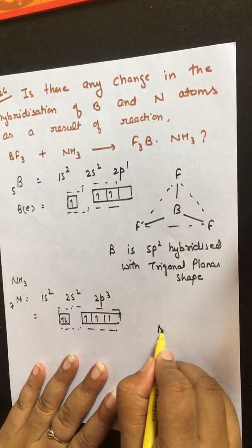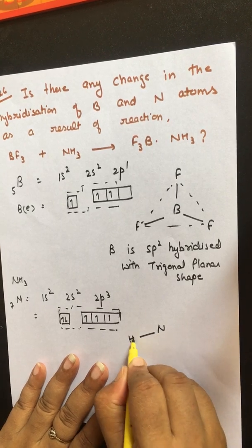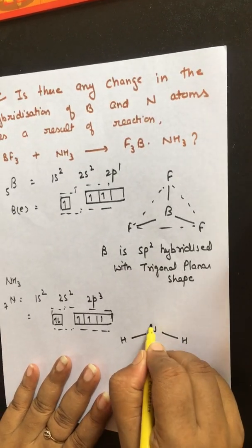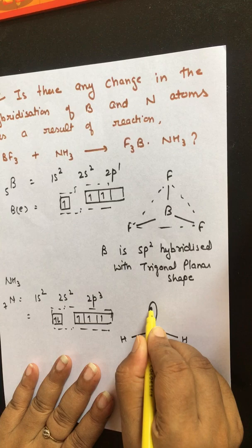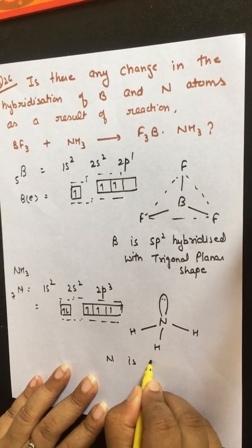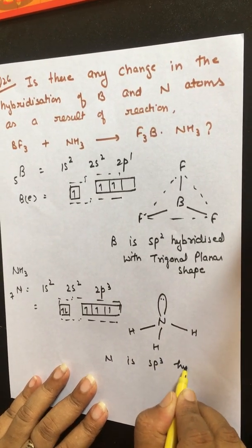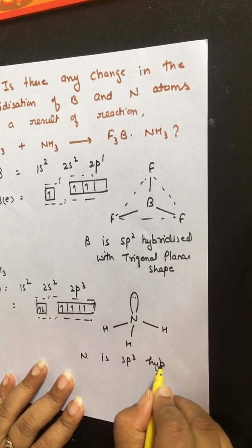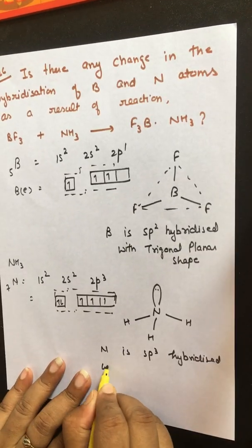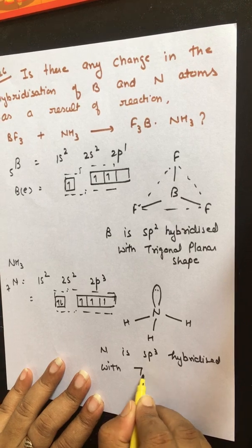So we can say nitrogen is sp³ hybridized having three bond pairs and one lone pair, with tetrahedral geometry and shape.